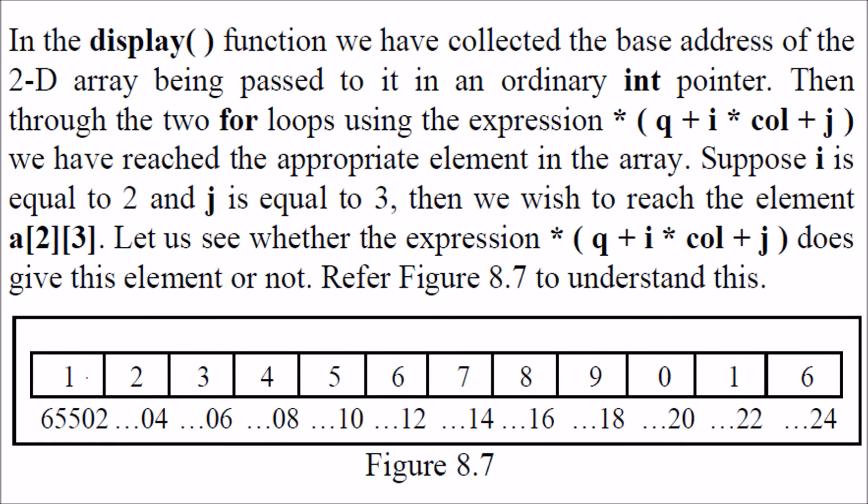Essentially, things are going like this. These values are contiguous, one by one in memory. In the first display method, we took the first row, then we jump to the second row, and we only had the pointer to the first one. So we use q plus i into column plus j.